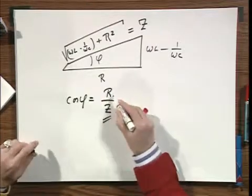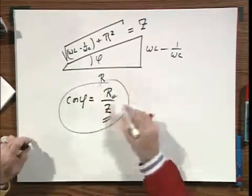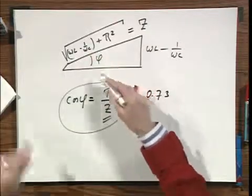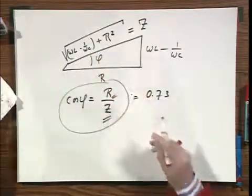Since Z was given and since R was given, you can find the cosine of phi, which I believe is 0.73. So it's very easy to go from tangent of phi to cosine of phi.